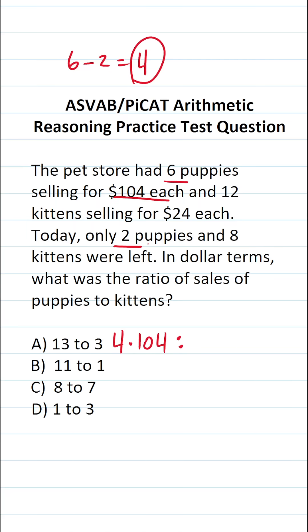And we're going to compare that to the number of kittens sold. Again, in the store, there were 12 kittens, and then there were eight kittens left. So this is 12 minus eight, which is four. So four kittens sold, and they are $24 each.